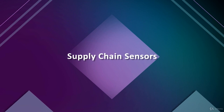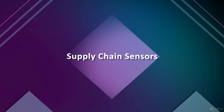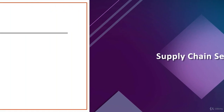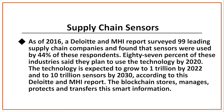Then there are supply chain sensors. Sensors give companies end-to-end visibility of their supply chain by providing data on the location and condition of supplies as they are transported around the globe. As of 2016, a Deloitte and MHI report surveyed 99 leading supply chain companies and found that sensors were used by 44% of respondents. 87% of these industries said they plan to use the technology by 2020. The technology is expected to grow to $1 trillion by 2022 and to $10 trillion by 2030. The blockchain stores, manages, protects, and transfers this smart information.